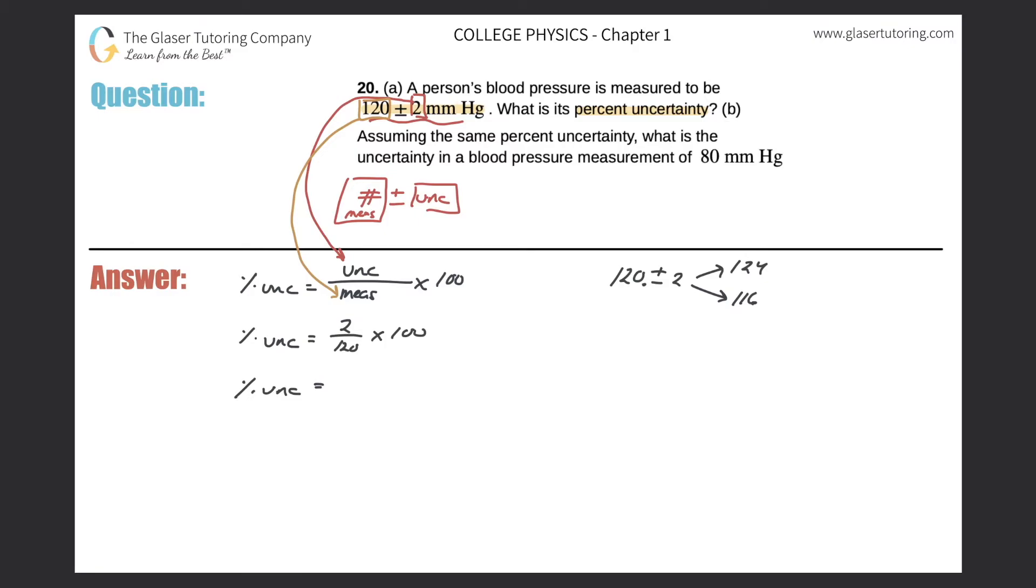Okay, so it's not written in, but there should be a decimal there. Now once I calculate this percent uncertainty, I take 2 and divide it by the 120, multiply that by then 100, and I get an answer of about 1.6 repeating. So it comes out to about 1.667.